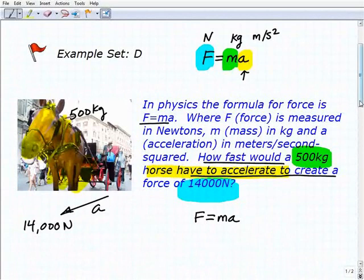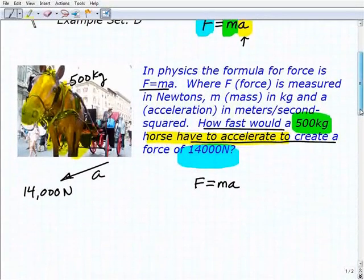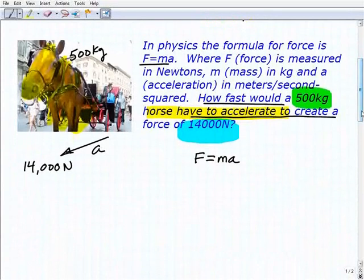Force equals mass times acceleration. If you haven't studied this formula in science yet, you certainly will, probably in a physical science class, definitely in physics. So, we want to be able to create 14,000 newtons worth of force from a 500 kilogram horse. So, this would be 500. That's our mass.